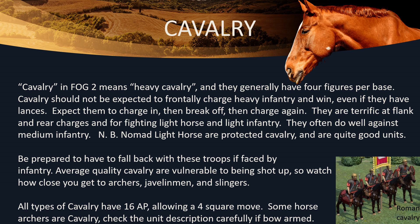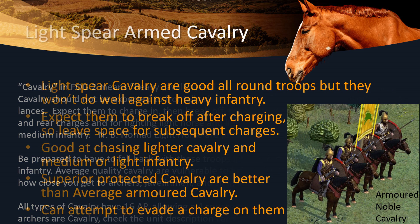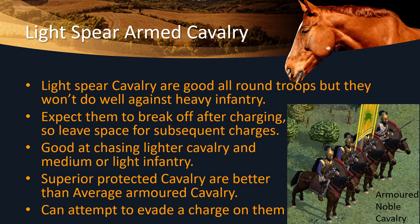All types of cavalry have 16 action points allowing a four-square move. Check the unit description carefully to see exactly what they are. Next, light spear-armed cavalry are good all-round troops, but they won't do well against heavy infantry necessarily — they'll break off rather than stick around. They are good at chasing lighter cavalry and medium or light infantry. One thing to note is that superior protected cavalry are better than average armoured cavalry, and they are very versatile because they will evade if something nastier than them charges them.